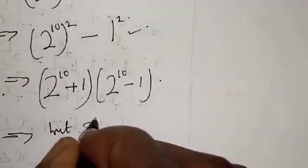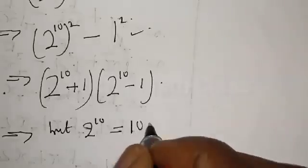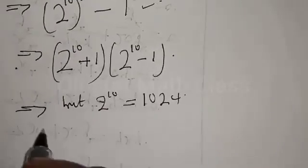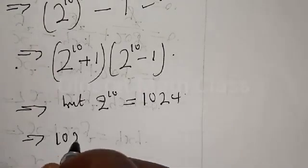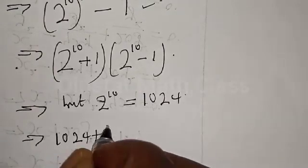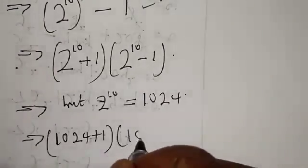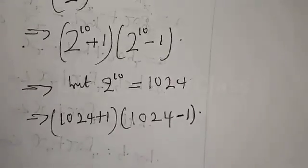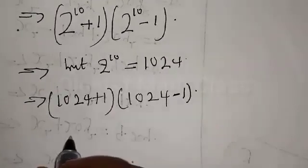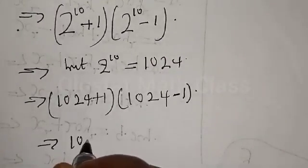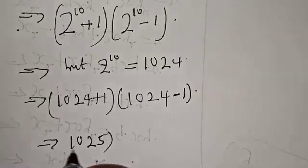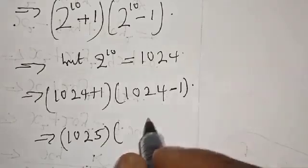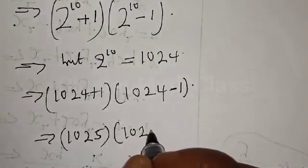But 2 raised to power 10 is equal to 1024. This implies that we have 1024 plus 1, into 1024 minus 1. Then 1024 plus 1 is 1025, and 1024 minus 1 is 1023. So we have 1025 into 1023.